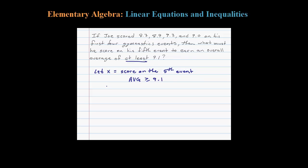So there's going to be five events: 8.7 plus 8.9 and so on, plus X, that's the fifth event. If we take all those numbers, that sum, and divide it by 5, that'll be my average, or Joe's average.